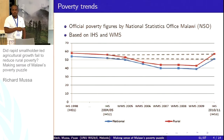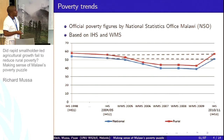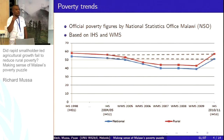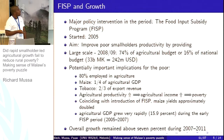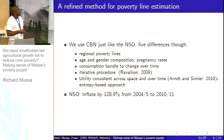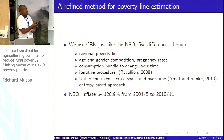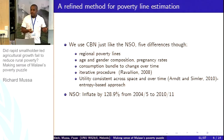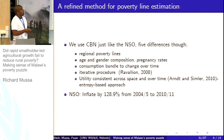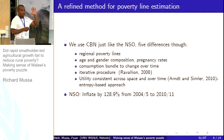That puzzle is essentially the motivation of this study: to re-evaluate the poverty measures and come up with new poverty lines. We use a refined method based on the cost of basic needs approach — the same standard approach the official measures use — but we try to refine it. There are five changes that we make to the official measurement of poverty.